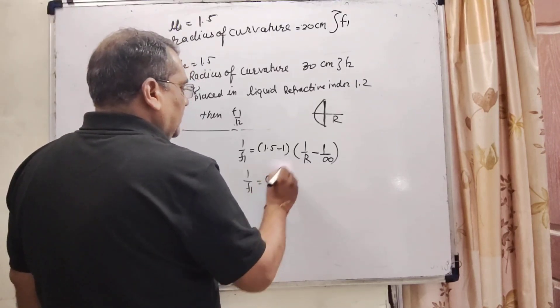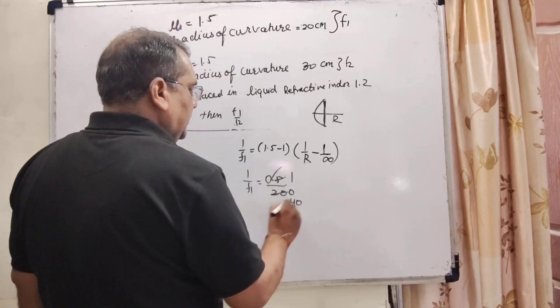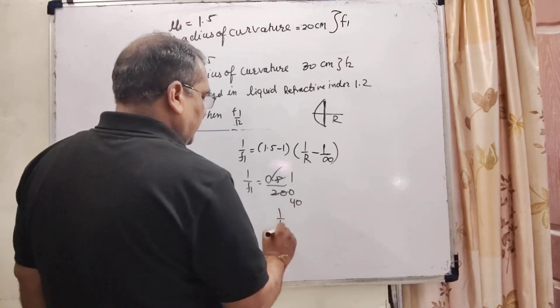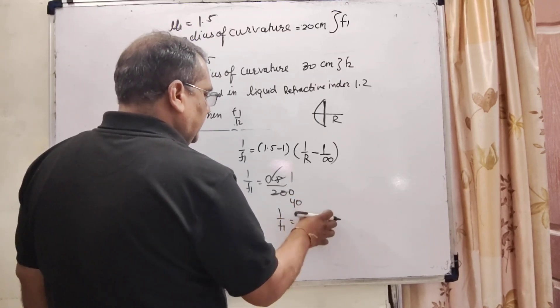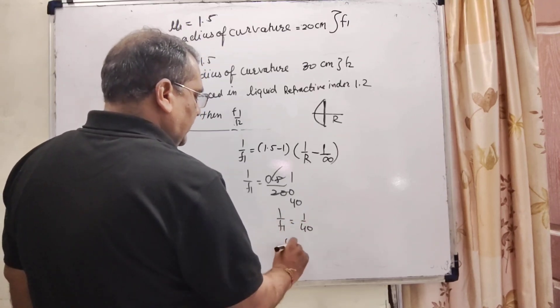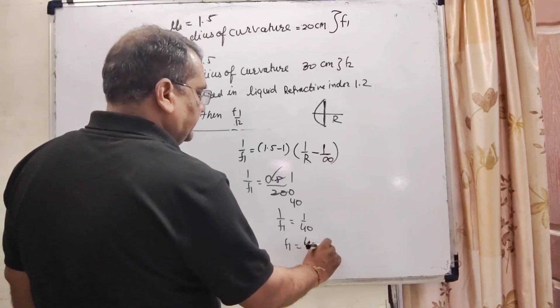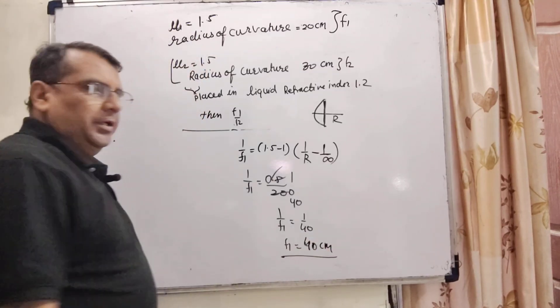Decimal is removed. 5 times 1 is 5, 5 times 4 is 20. So here 1 by f1 that is 1 by 40. So f1 equal to 40 cm.